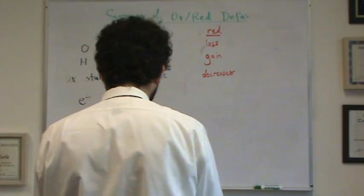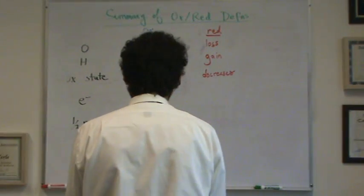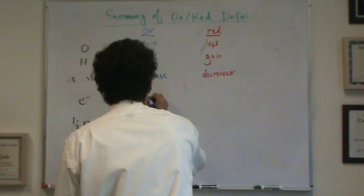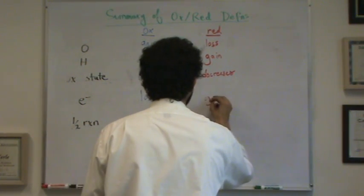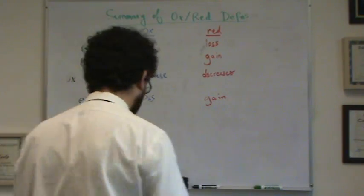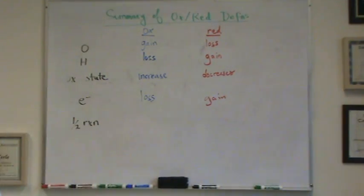You can also do this definition by electrons. So, if you have a loss of electrons versus a gain of electrons. So, if you lose electrons, that's oxidation. If you gain electrons, that's reduction. This is the most popular type taught by a lot of people.